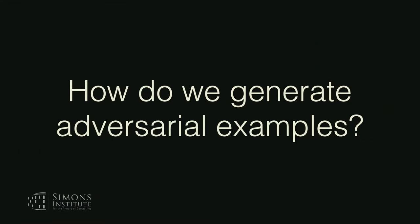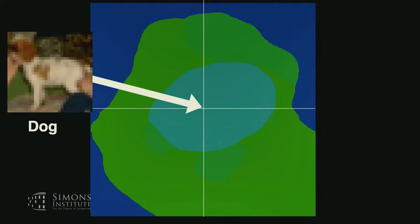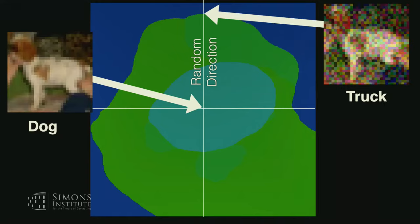Let me spend a minute giving visual intuition for how we generate adversarial examples. I'm showing a decision boundary analysis plot of a neural network. Every point corresponds to an image — there's a dog from CIFAR in the middle. Every color-coded region corresponds to a class label, and the light blue region is labeled 'dog'. As I add Gaussian noise to the image along the X and Y dimensions, every point corresponds to the label of that image as a linear combination of two random directions.